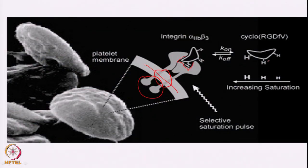As you increase the saturation effect, the ligand proton which is quite close to the binding site will be more perturbed, and those further away will be less perturbed. If you keep increasing the saturation, the effect will be transferred over greater distances. Whatever is nearest to the binding site will be most perturbed, then progressively less so. By increasing saturation systematically, you can determine which protons or epitopes are closer or further from the binding site.